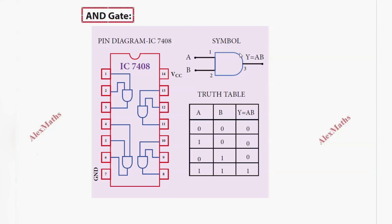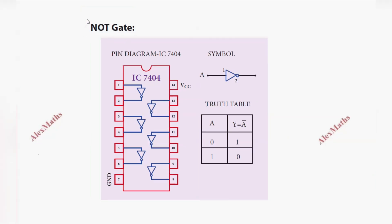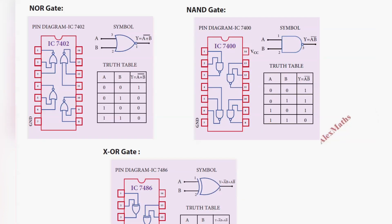For the last OR option, A = 1, B = 1: 1 + 1 = 1. For AND gate: Y = A · B. For 0 · 0 = 0; for 1 · 0 = 0; for 0 · 1 = 0; for 1 · 1 = 1. For NOT gate: Y = A'. The complement of 0 is 1, and the complement of 1 is 0. Similarly, you can do the calculation for NOR gate, NAND gate, and XOR gate.